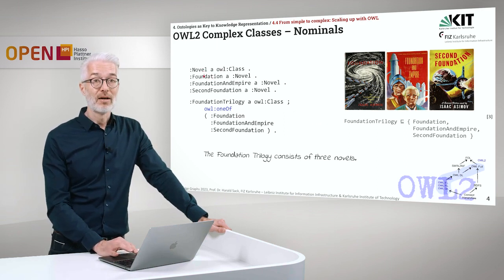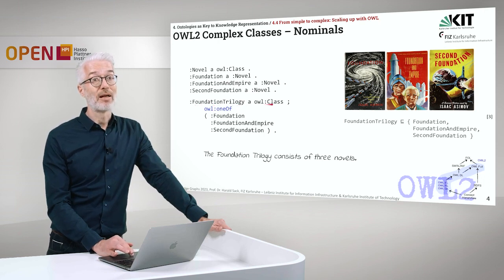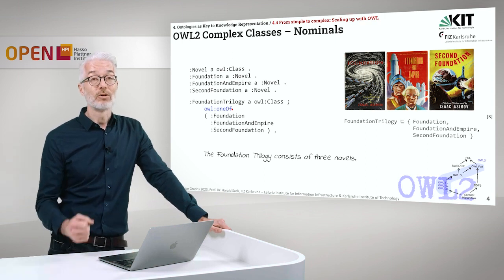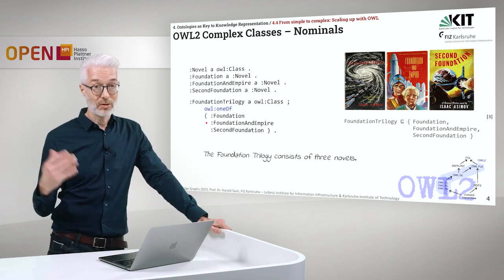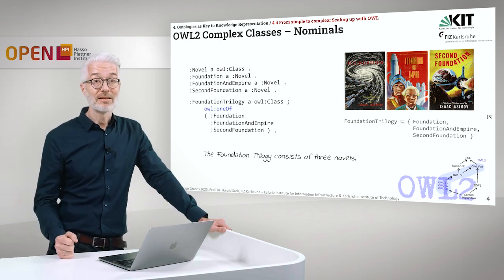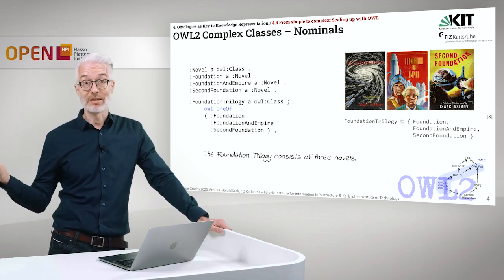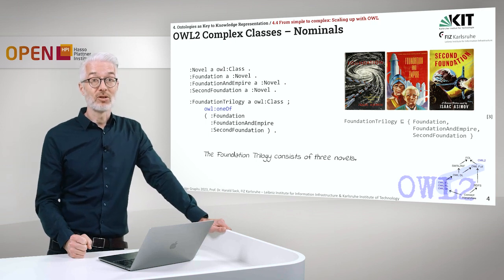We define 'novel' as a class; Foundation, Foundation and Empire, and Second Foundation are each defined as a novel. Now we define the Foundation Trilogy as a class and connect it with OWL oneOf — exactly the constructor to build nominals — followed by a collection. You remember collections from RDFS: you simply enumerate things in a closed list. Collections cannot be further extended, so we use this concept from RDFS here also in OWL 2.